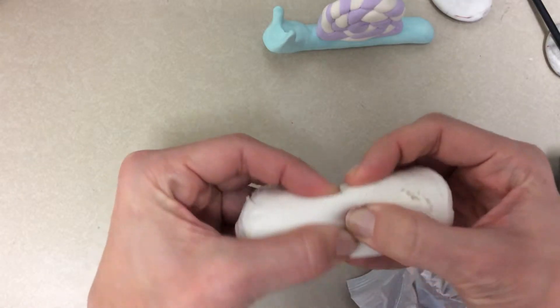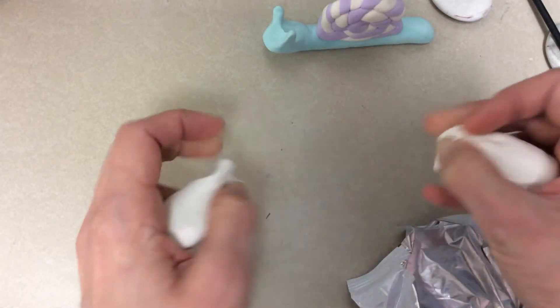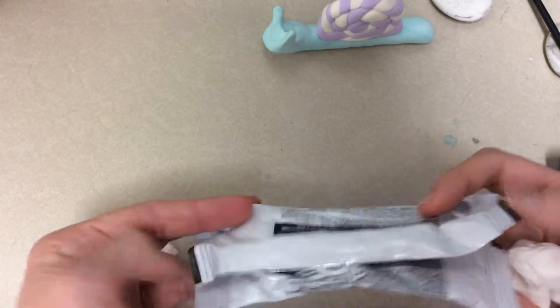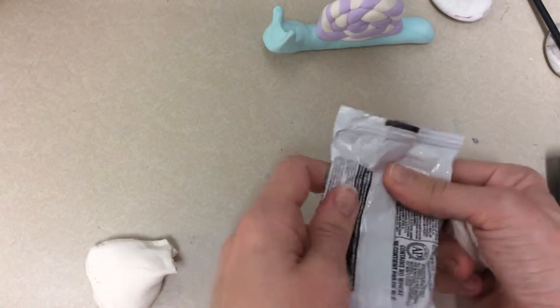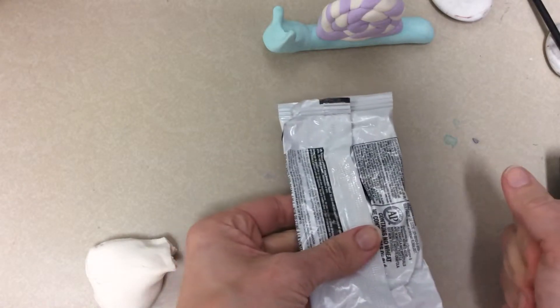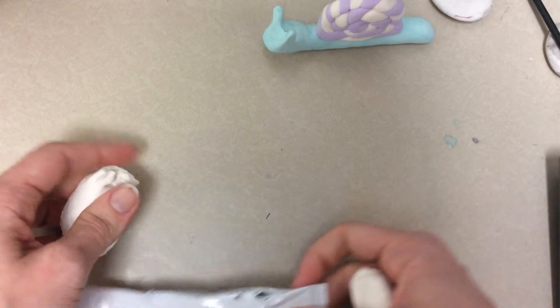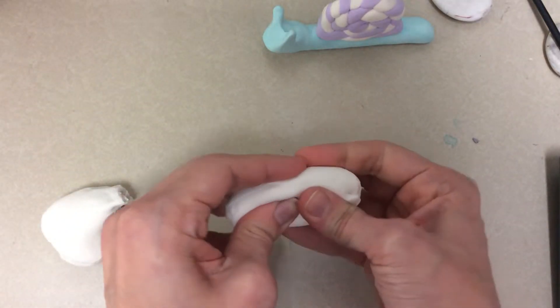The first thing you want to do is divide your Model Magic in half. Each student gets one package and that's it. If you don't use all of it, you can always give it back to the teacher or share it with someone else. If you need to use scissors to cut open the bag, go ahead or ask the teacher for help.